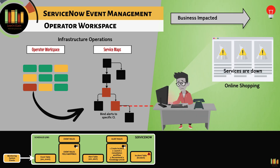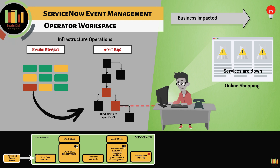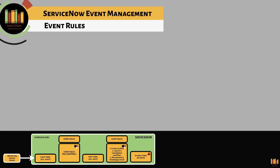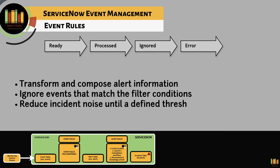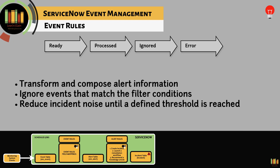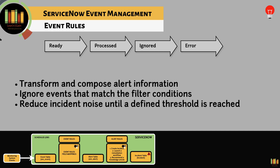Event rules bind alerts to a specific configuration item within the CMDB, showing what application service is impacted within the Operations Workspace. Event rules are also used to transform and compose alert information from a ROI event and populate meaningful information within the respective alert fields. Event rules can also be used to ignore events that match filter conditions, or to reduce incident noise until a defined threshold is reached — an alert will not be generated until an event occurs at or above the defined threshold value.